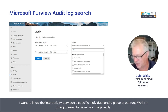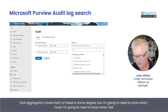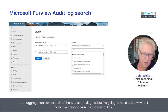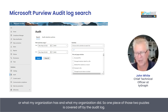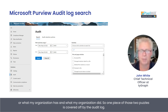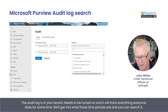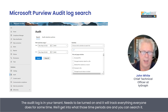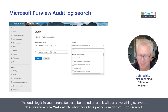I'm going to need to know two things. That aggregation covers both of these to some degree, but I'm going to need to know what I have and what I did — or what my organization has and what my organization did. One piece of those two puzzles is covered off by the audit log. The audit log is in your tenant, needs to be turned on, and it will track everything everyone does for some time. We'll get into what those time periods are.